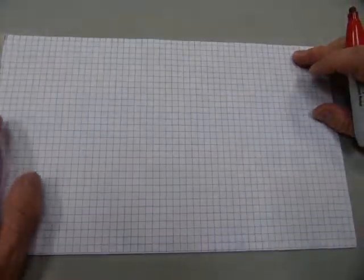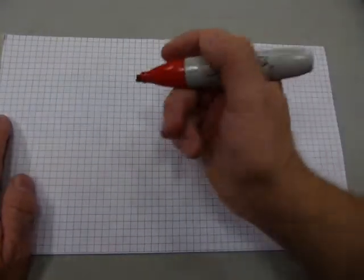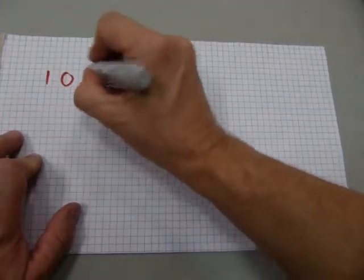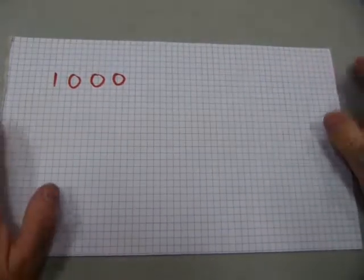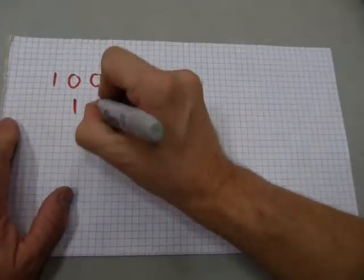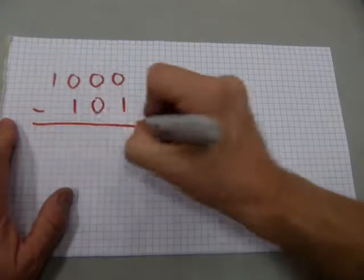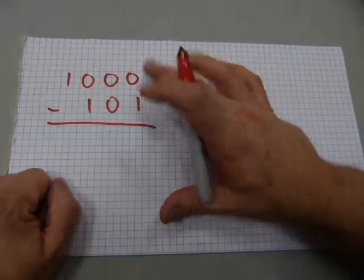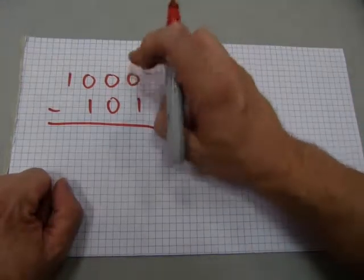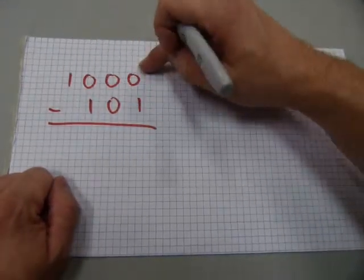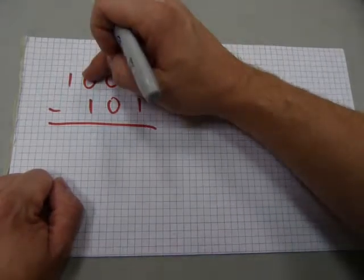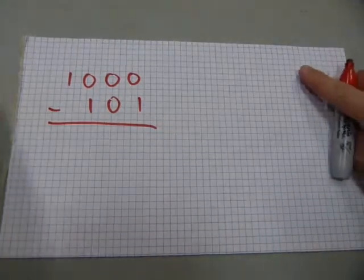Now with borrowing. Let's take the decimal amount 1000 and subtract 101. You cannot take away one from a zero — you need an amount there. You can't borrow from the adjacent column because there's nothing there, and you can't borrow from the next one either. You have to borrow from all the way across.